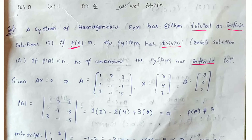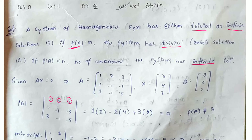Now we find the determinant of the matrix. Expanding along the first row: first element 1 times the minor gives ((-1)(-5) - (-3)(-1)) = 5 - 3 = 2. Second element -2 times ((-5) + 9) = -2 times 4 = -8. Third element 3 times (-1 + 3) = 3 times 2 = 6. So the determinant equals 2 minus 8 plus 6, which equals 0.